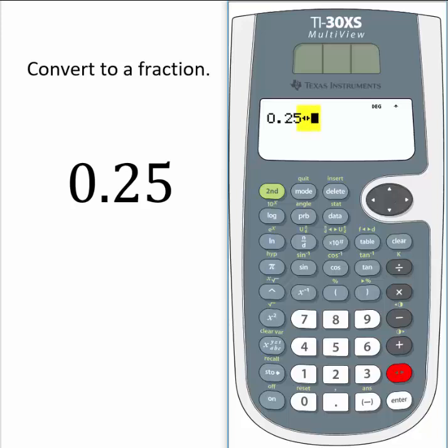Notice in the window that the calculator has printed double arrows next to the decimal 0.25. When we select enter, the toggle button switches the answer from one form to the other. So in this case, it switched the decimal 25 hundredths to the fraction 1 fourth.